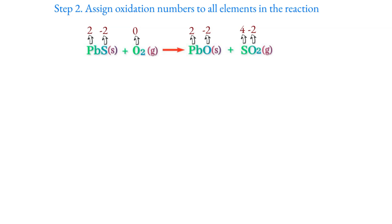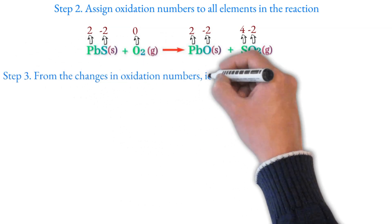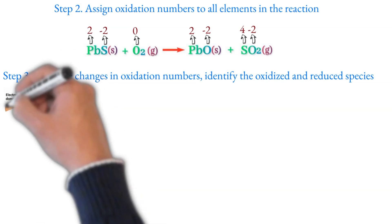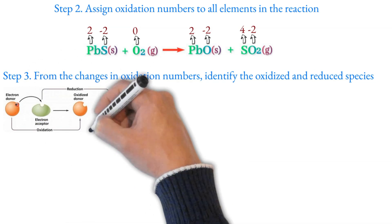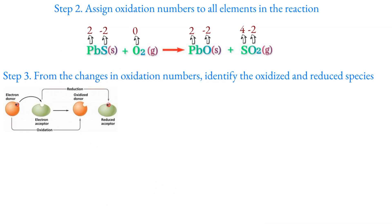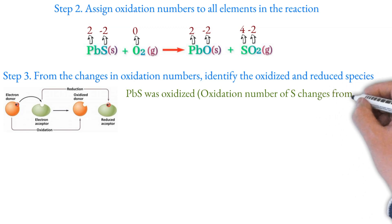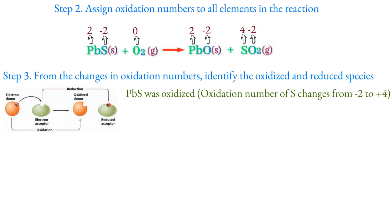Step 3: Identify the oxidized and reduced species. Sulfur is minus 2 in one compound and plus 4 in another, so sulfur is oxidized — its oxidation number goes from minus 2 to plus 4. The other species is reduced. When oxygen is involved, it goes from a free element to a compound and is reduced.